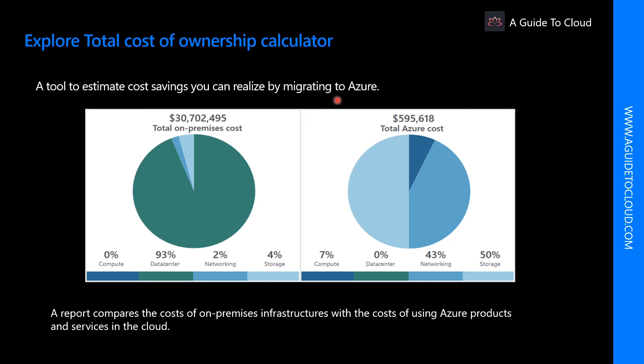To use the TCO Calculator, complete three steps: define your workloads, adjust assumptions, and view reports. The TCO Calculator generates a detailed report based on the details you enter and the adjustments you make. The report allows you to compare the cost of your on-premises infrastructure with the cost of using Azure products and services to host your infrastructure in the cloud.